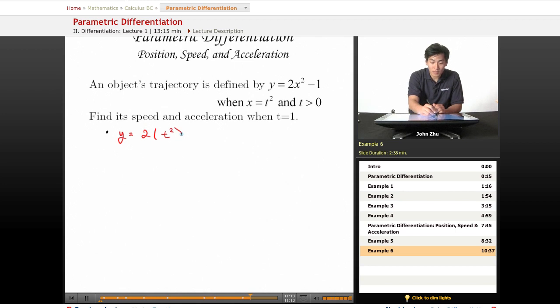So t squared minus 1 equals 2t to the fourth minus 1. So now we have y equals 2t to the fourth minus 1 and x equals t squared, and thus giving us our parametric expression. So now it looks like the ones we've been dealing with.